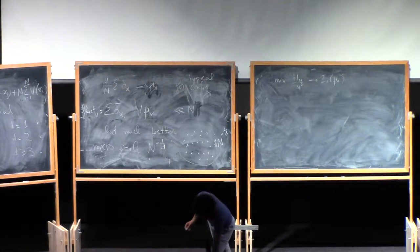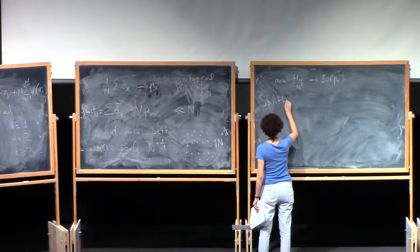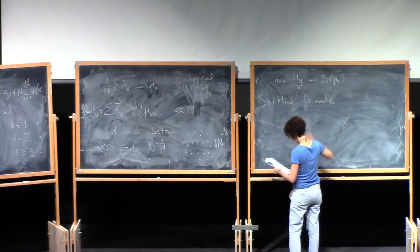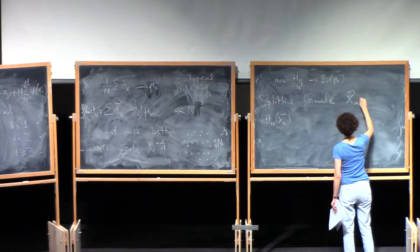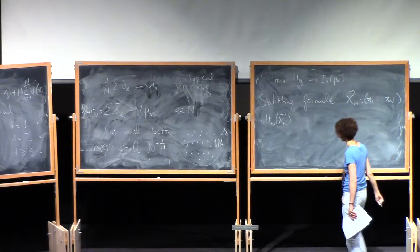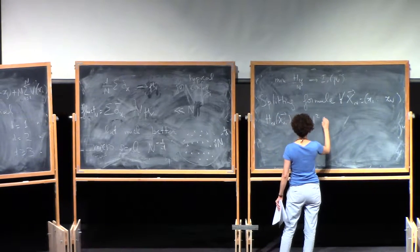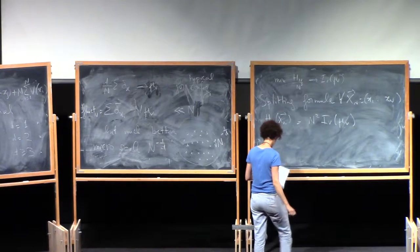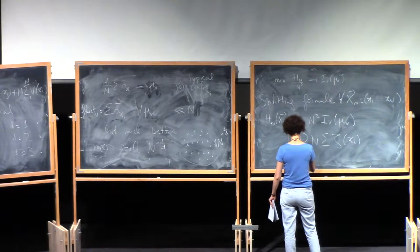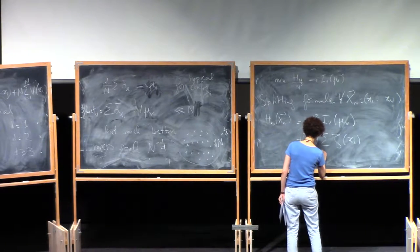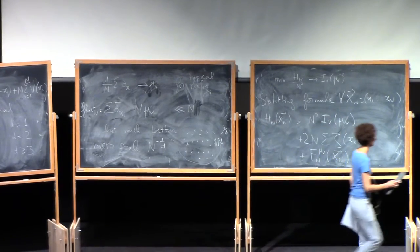So we have a little formula that is actually not difficult to prove. Call it the splitting formula. It says that for any configurations, I will call XN. XN will be a shortcut for the n-topole X1, XN. So for any XN, the energy I can split as the minimal one, this N squared IV of MuV, plus 2N sum of Zeta of Xi. And I will define all these terms. Plus FN MuV of XN. And this function Zeta is something that already appeared, except I forgot to define it.